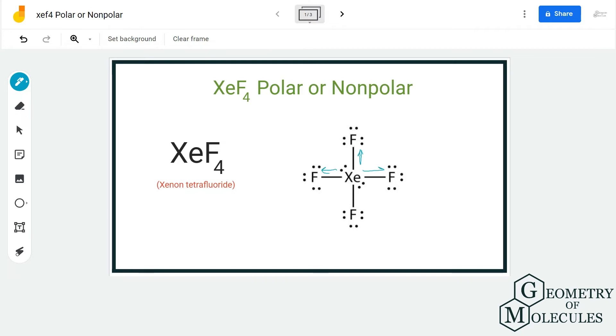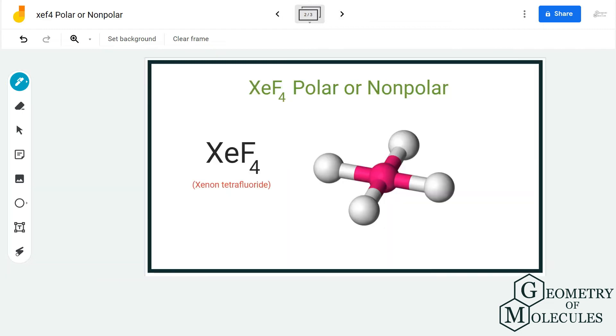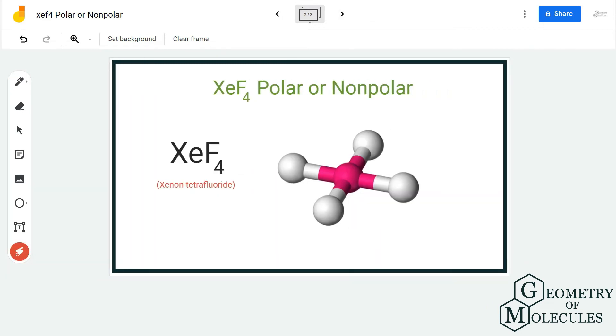Generally, molecules that have a symmetrical distribution of electrons or atoms do not have any polarity and there is no net dipole moment in this molecule. So even though fluorine is more electronegative than xenon, there will be no net dipole moment.